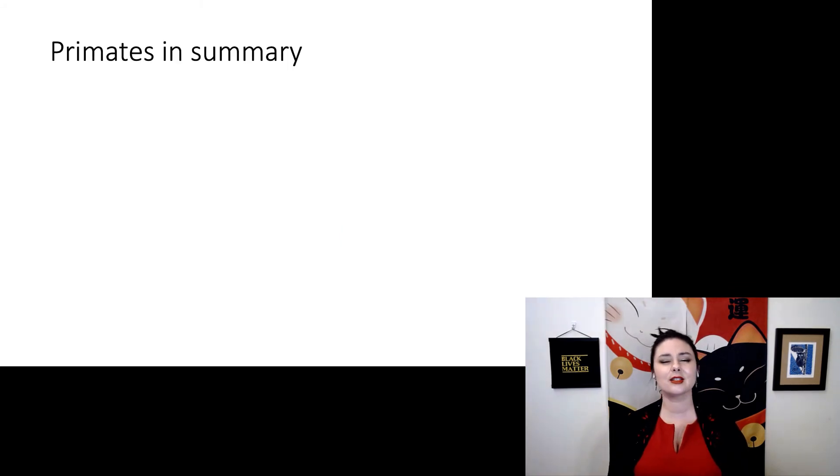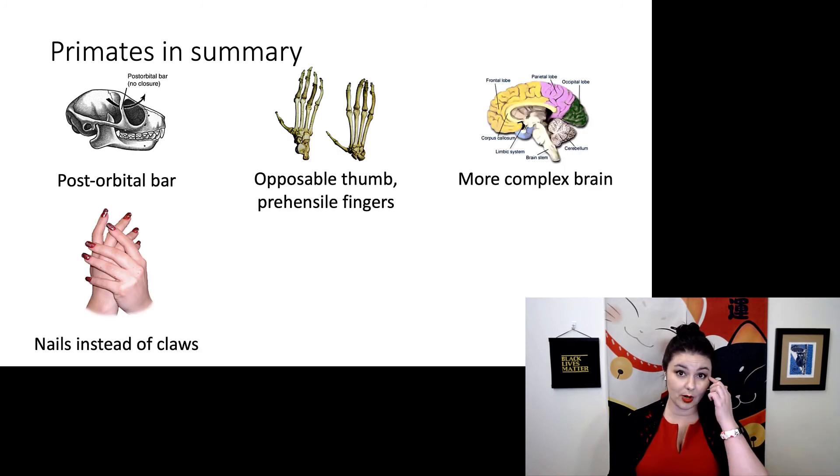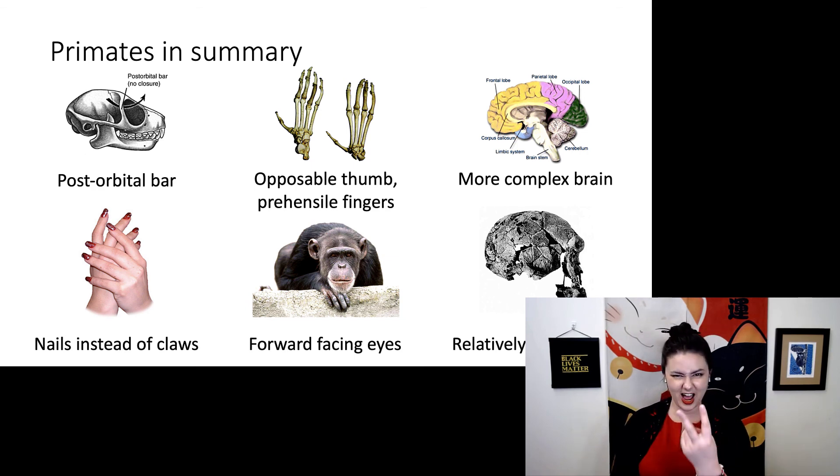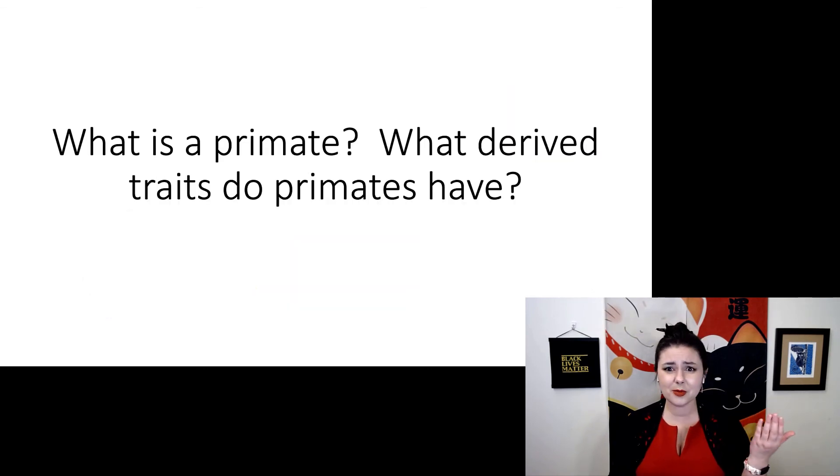So let's summarize some of our most important characteristics here. We see this post-orbital bar. We have an opposable thumb and prehensile fingers. So very flexible hands. We have a more complex and larger brain. We see nails instead of claws. Our eyes face to the forward. And we have a relatively short snout. So what's a primate? And what derived traits do primates have?